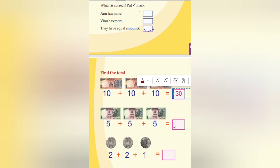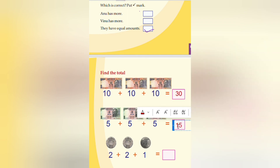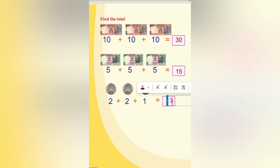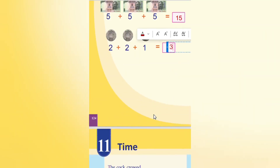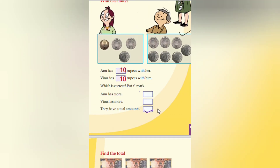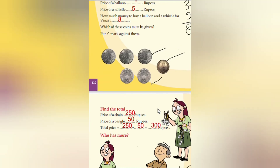5 plus 5 plus 5 equals 15. Then, 2 plus 2 plus 1 equals 3. This page is complete. This chapter is mainly about coins - how to add the coins, how to read them, and who is pictured on the coins. Mahatma Gandhi is there on the coin. Please do like, share and subscribe to my channel. Thank you.